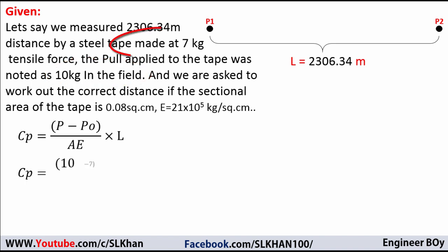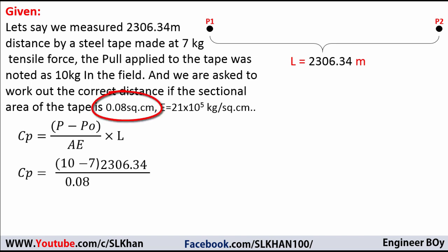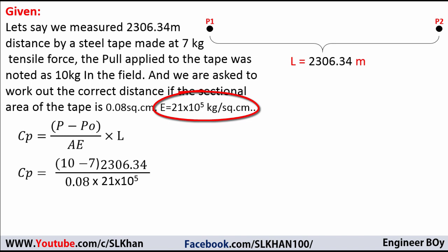So we put the values into the formula: Cp equals P, which is 10 kg, minus P₀, which is 7 kg, times L, the measured distance, which is 2306.34 meters, divided by A, the cross-sectional area of the tape, which is 0.08, times the modulus of elasticity, which is 21 times 10 to the power 5 kg per square centimeter. This gives us Cp equals 0.0412 meters — that is the correction for pull or tension.